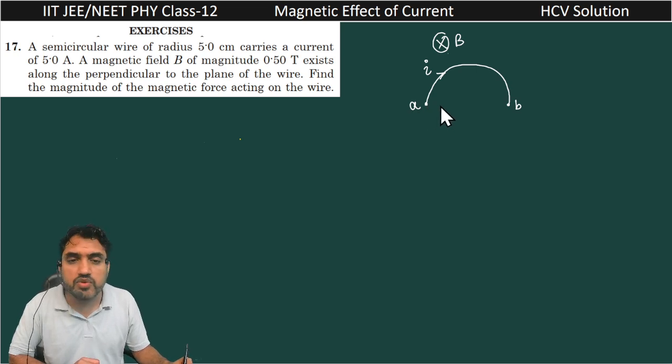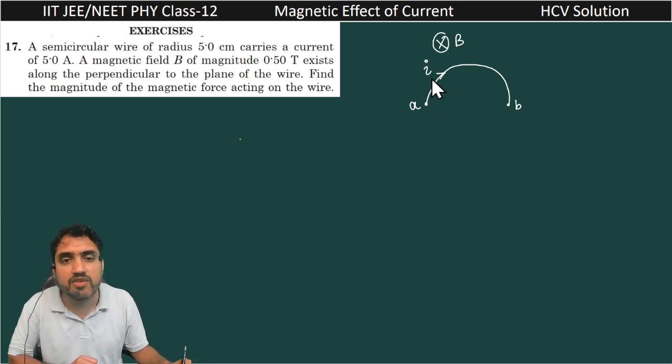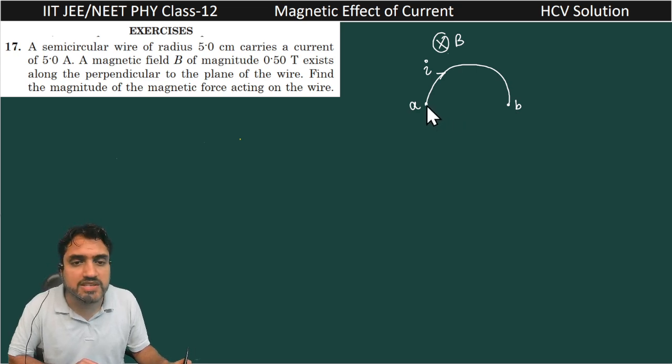If we are just connecting these endpoints A and B, we will get one vector, that is L vector. And what is the magnitude of this L vector? That is equal to 2R.